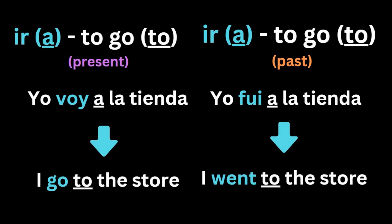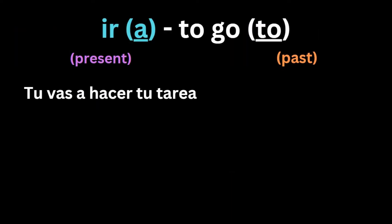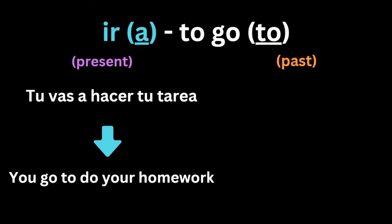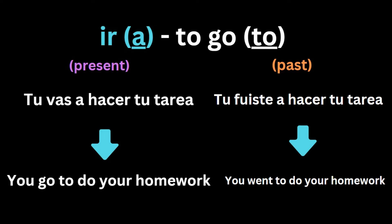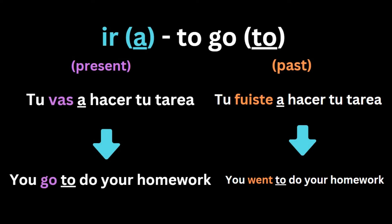You can sometimes refer to actions like tú vas a hacer tu tarea, you go to do your homework, and if you want to put the phrase in the past, you simply change only one word by saying tú fuiste a hacer tu tarea, you went to do your homework. In both cases, everything else in the sentence stays the same besides the conjugation of ir, both in English and Spanish.